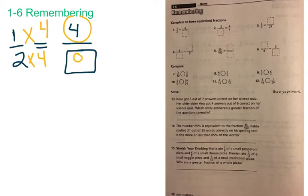2 times 4 is equal to 8, so our equivalent fraction for 1 half that has a numerator of 4 is 4 eighths. You're going to write 8 into the box. That's all you're doing there.